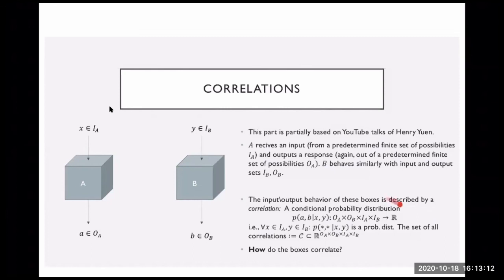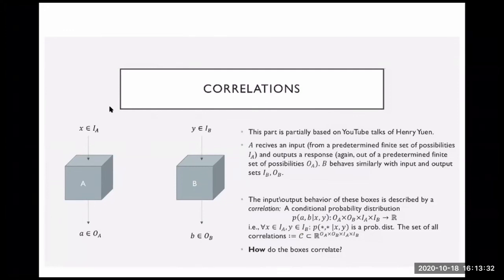The input-output behavior of these boxes can be described by a conditional probability: given that the boxes were asked X and Y, what is the probability that they will answer A and B? We call such conditional probability distributions 'correlations.' The set of all such correlations lives in some Euclidean space — these are just functions from a finite set to R, so this lives inside the unit cube in some high-dimensional Euclidean space.